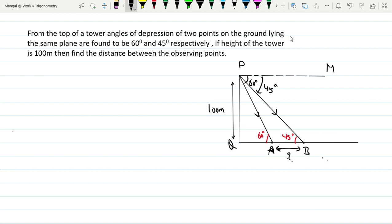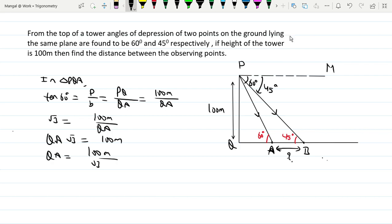In triangle PQA, perpendicular side PQ, base QA. So tan 60 degrees equals perpendicular divided by base. So tan 60 degrees equals PQ divided by QA. PQ is 100 meters, so tan 60 degrees equals root 3 equals 100 meters divided by QA. So QA times root 3 equals 100 meters. So QA equals 100 meters by root 3, which equals 100 divided by 1.732, which equals 57.74 meters.